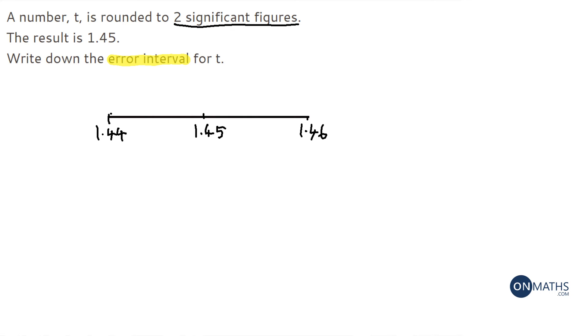Next thing we've got to do is figure out what's the lowest it could have been. The lowest it could have been is halfway between 1.44 and 1.45 and that's going to be 1.445.